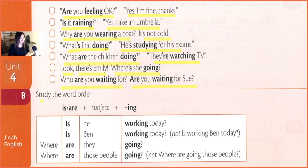Study the word order. If you want to use 'where,' we start with 'where.' Where is he working today? Where is Ben working today? Where are they going? Where are those people going?